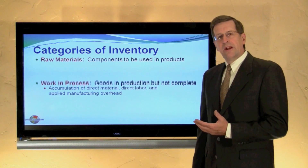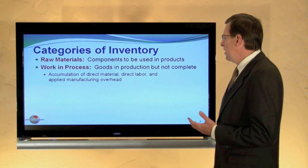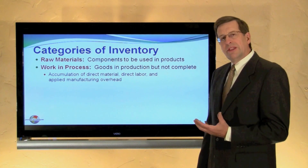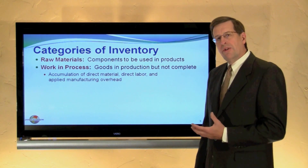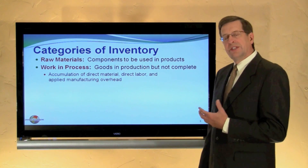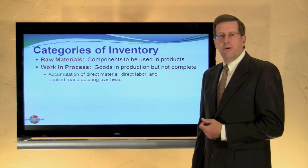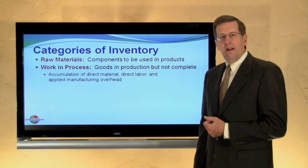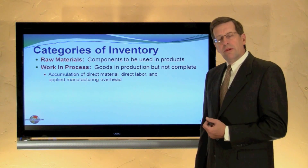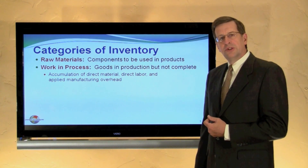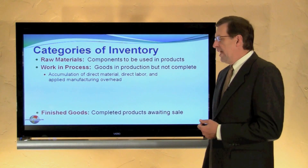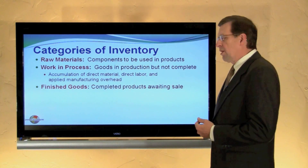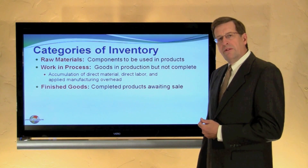The second category is the work in process category — those are goods in production but not yet complete. The work in process inventory account carries accumulated costs of direct materials, direct labor, and manufacturing overhead. When the work in process is completed, goods are transferred into the final category of inventory: finished goods — the completed goods that are awaiting sale to others.